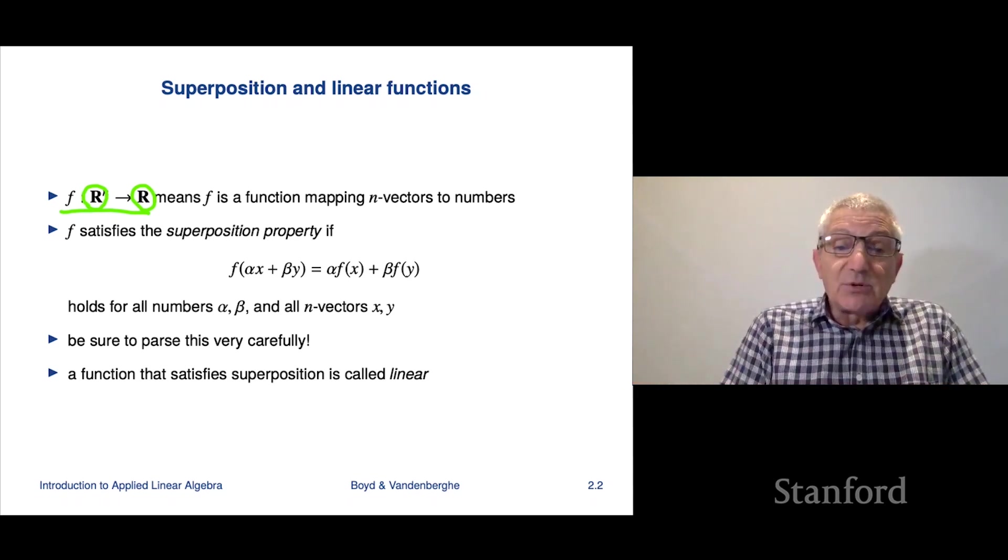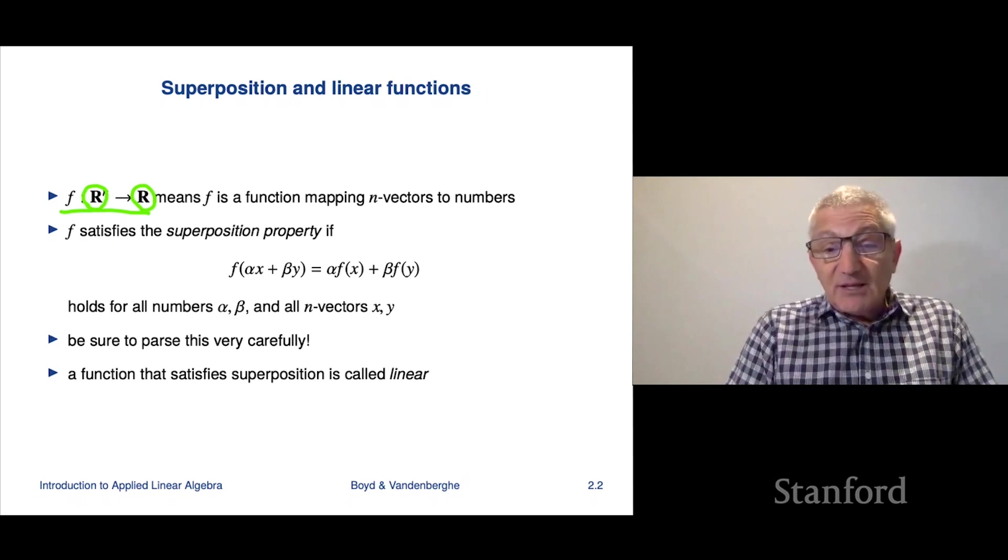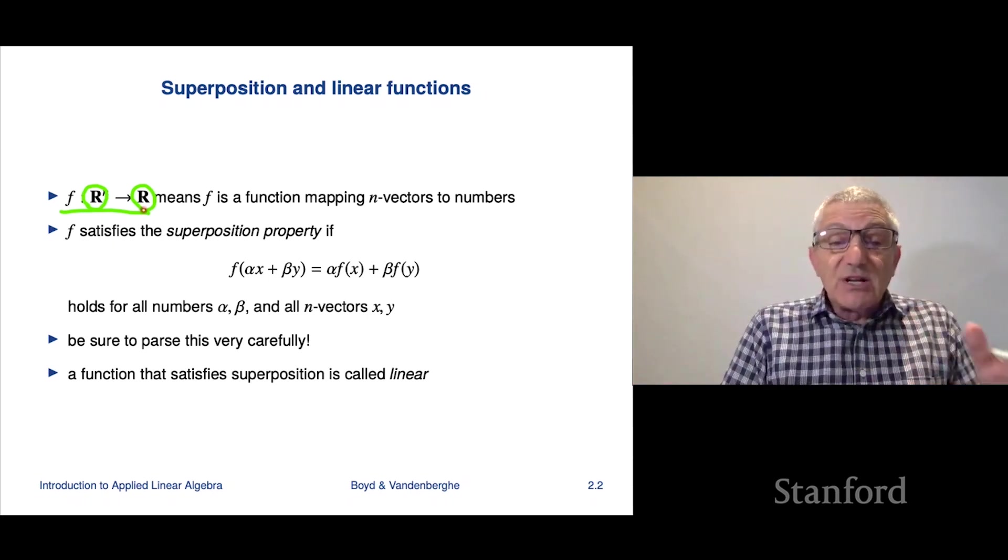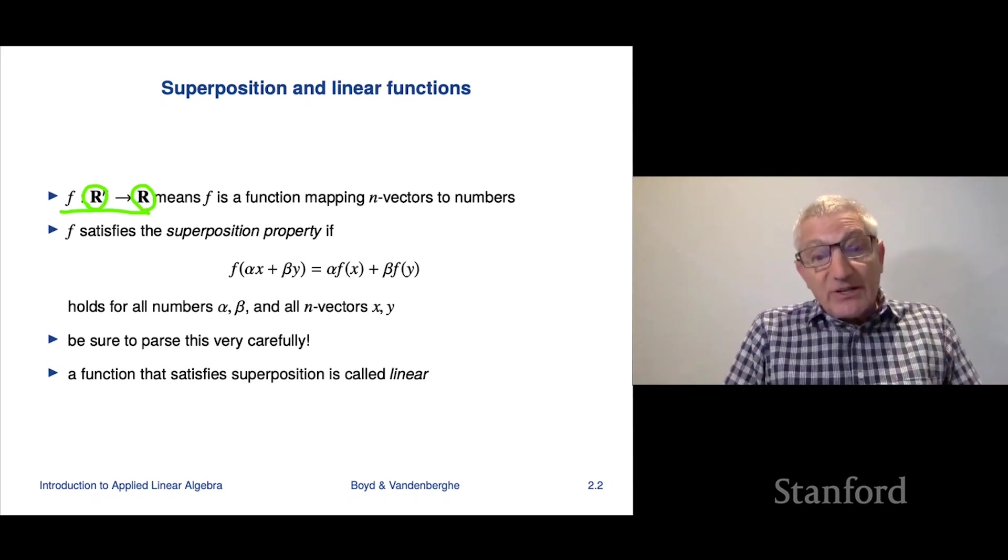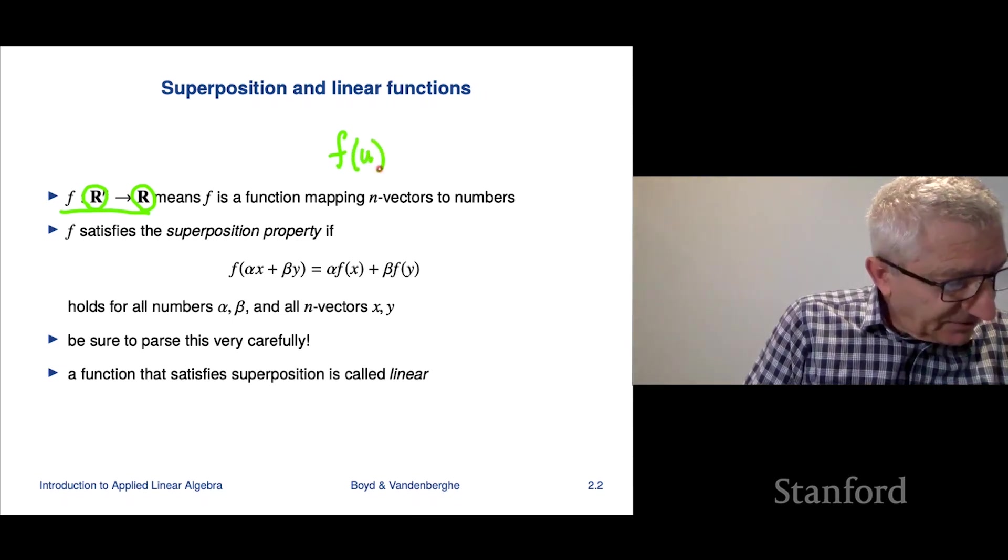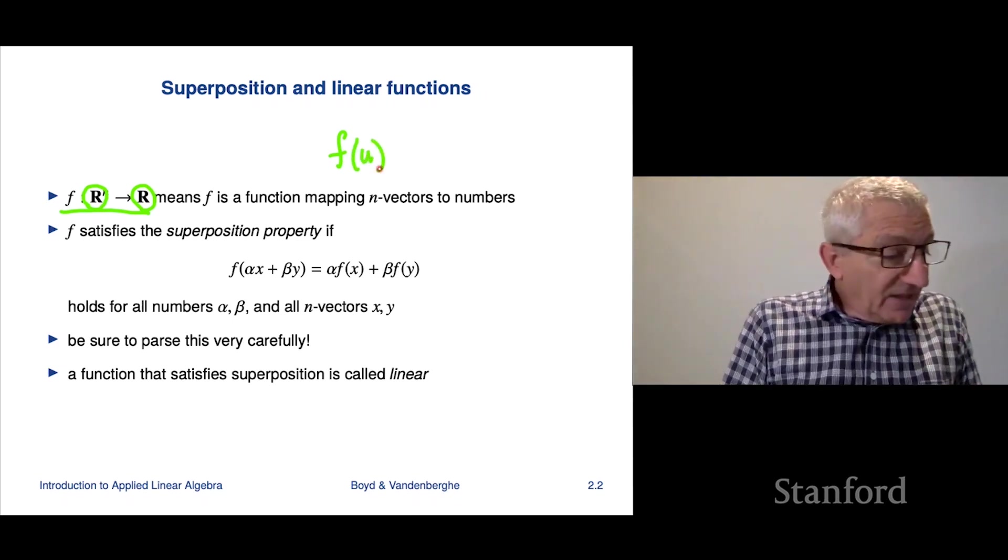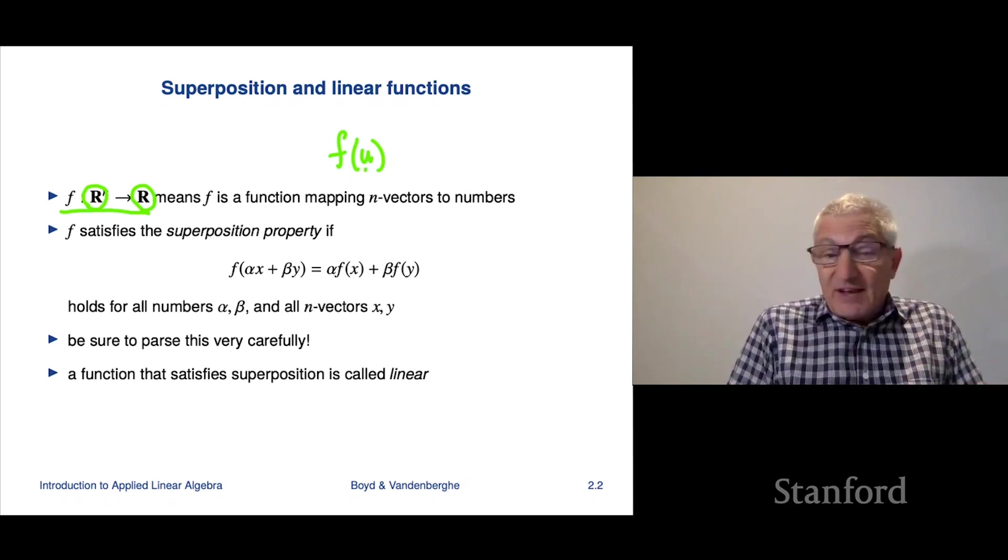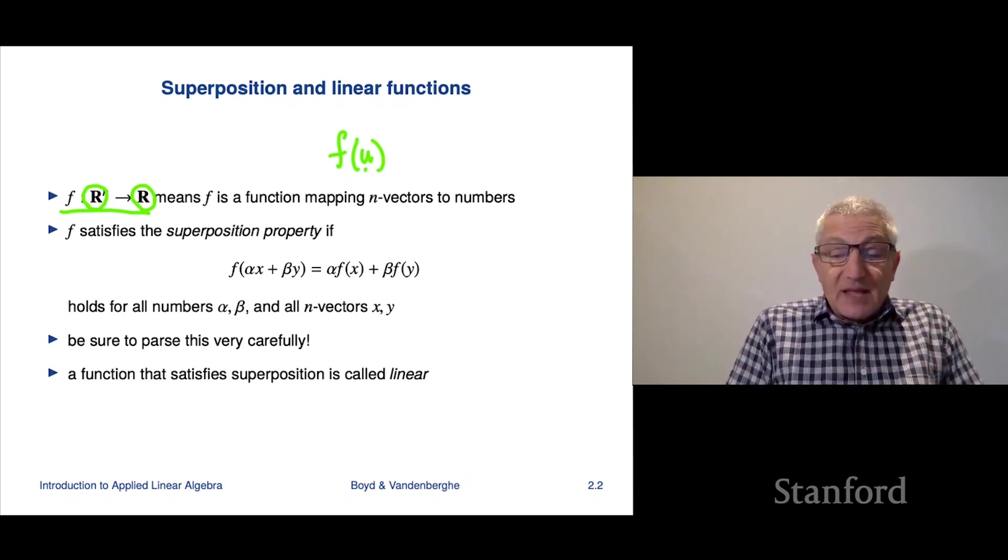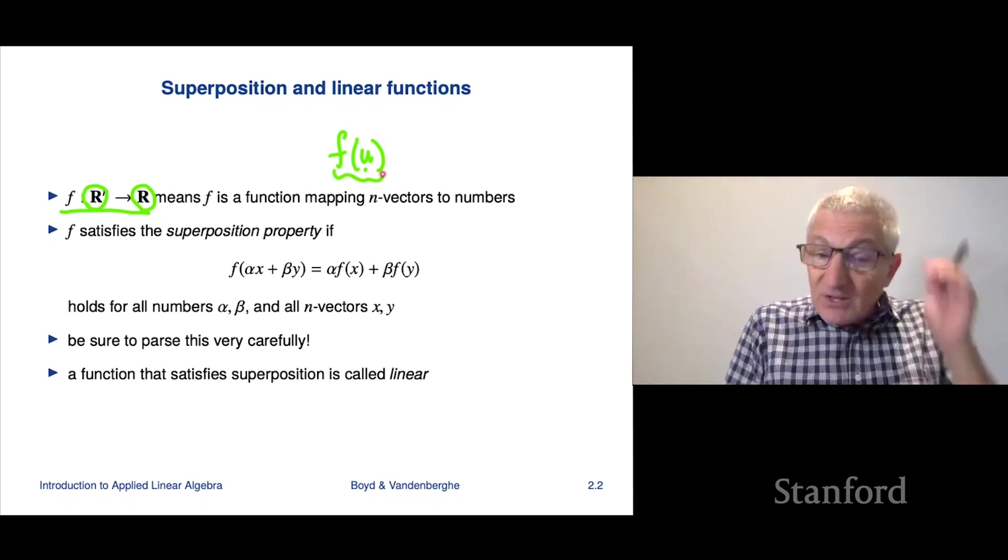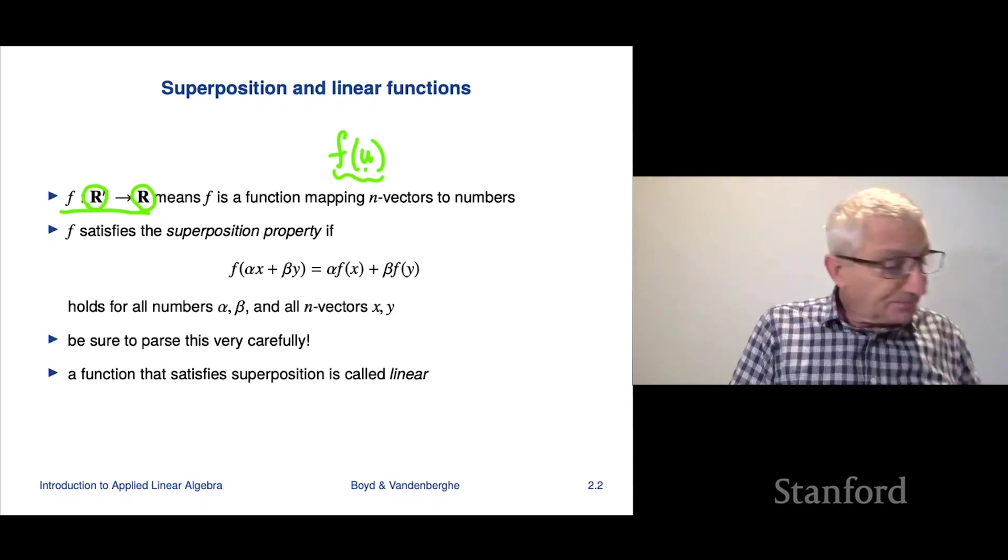You can think of it as a process that takes n numbers in, something happens, and it gives you a number back. You can think of it as a subroutine in a computer program. Or you can think of it as simply one real number, that's the output, which depends on n real numbers, and you can think of those as the input. That's the notation.